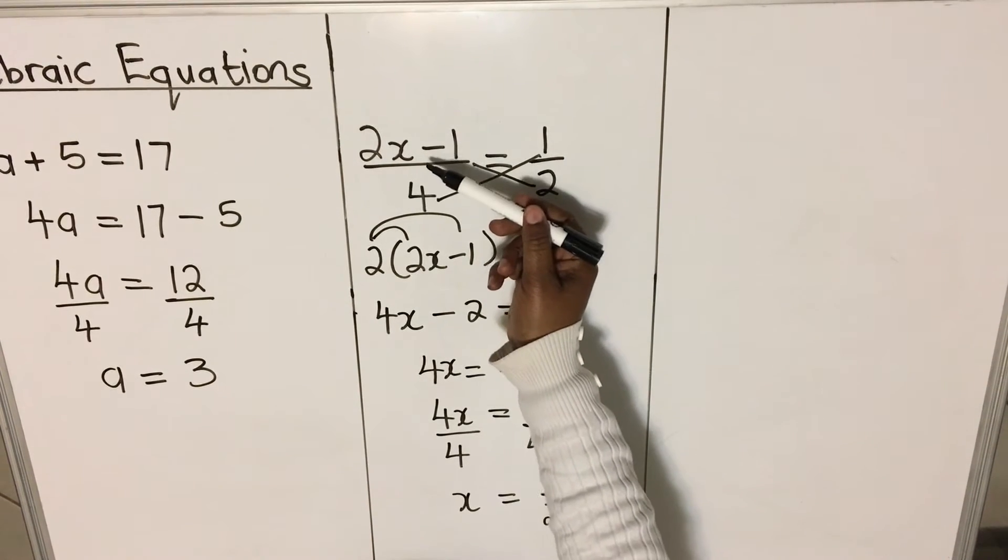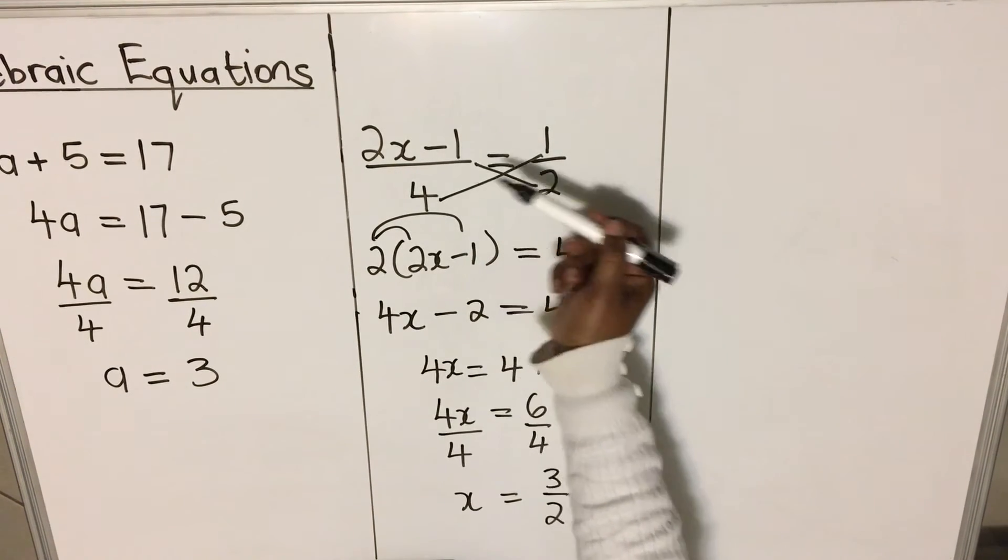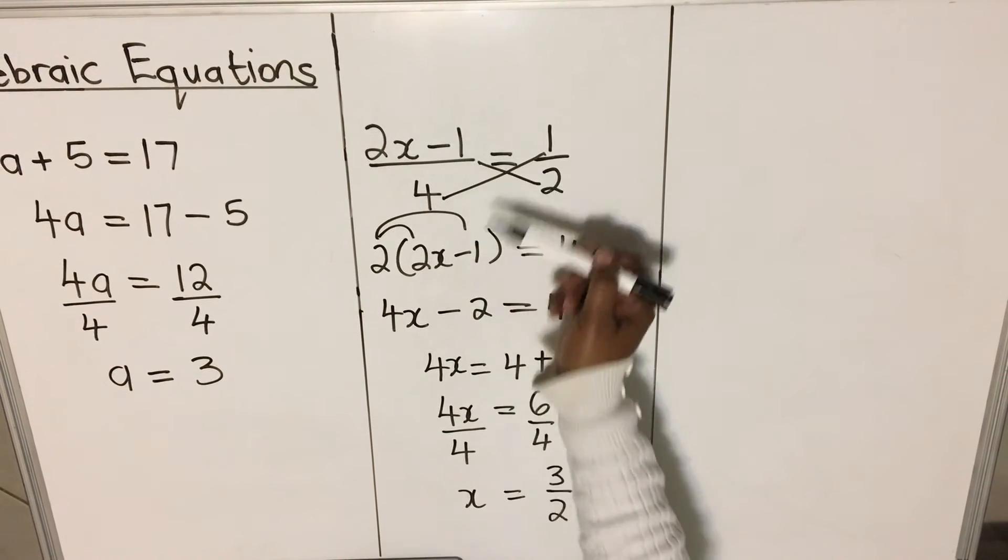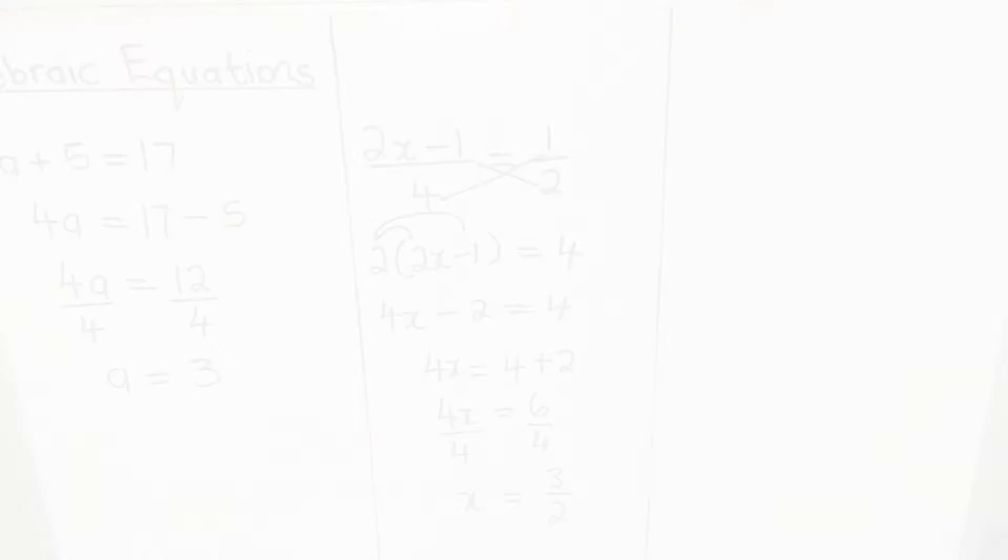So just remember, when we have one term, a fraction, and one term fraction, you cross-multiply. Let's look at the third example.